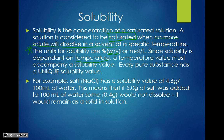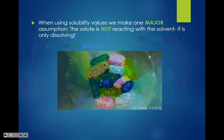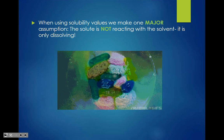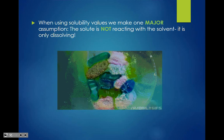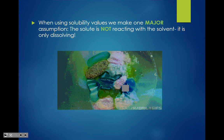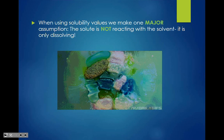Here's an example: NaCl has a solubility of 4.6 grams per 100 milliliters of water. That means if I add more than 4.6 grams of salt to 100 milliliters of water, not all of it will dissolve — only 4.6 grams will dissolve because that's its solubility. When using solubility values, we make one major assumption: the solute is not reacting with the solvent, it is only dissolving.